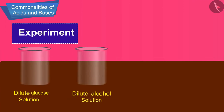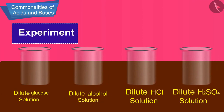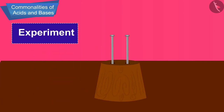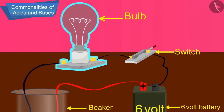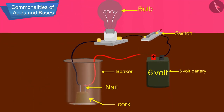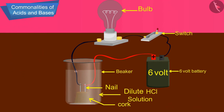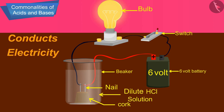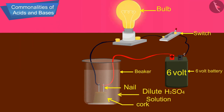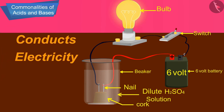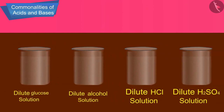Take solutions of glucose, alcohol, hydrochloric acid, sulphuric acid, etc. Fix two nails on a cork and place the cork in a 100 ml beaker. Connect the nails to the two terminals of a 6-volt battery through a bulb and a switch. Pour some dilute hydrochloric acid in the beaker and switch on the current — the bulb starts glowing. This shows that HCl solution conducts electricity. If we repeat with sulphuric acid, the bulb glows again — all acid solutions conduct electricity.